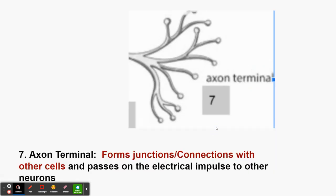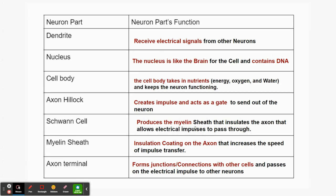The axon terminal forms junctions — which are really just connections — with other cells and passes the electrical impulse to another neuron. Fill in the blank: forms junction connections with cells and passes on electrical impulses to other neurons.